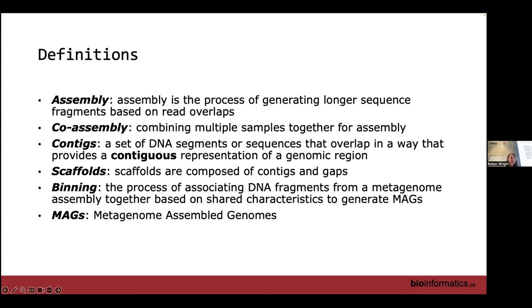After assembling, we have contigs — the longer sequences generated from overlapping reads. Contigs are defined as a set of DNA segments that overlap in a way that provides a contiguous representation of a genomic region. Scaffolds, which we don't discuss as much, are essentially a set of contigs with potentially gaps in between them, and there are different ways to infer that a gap might exist between contigs.